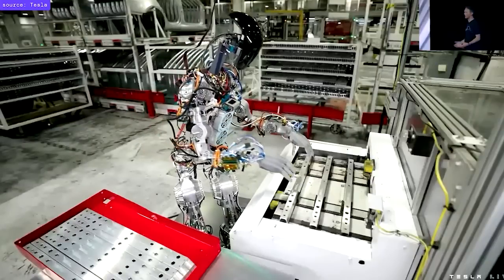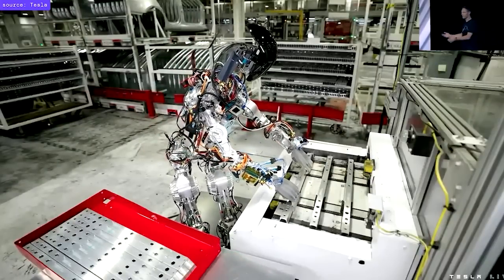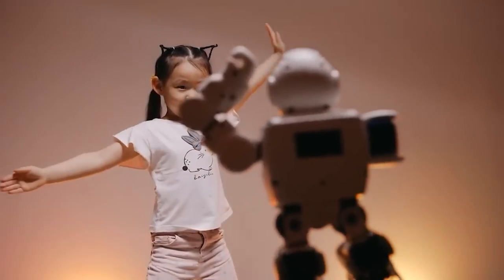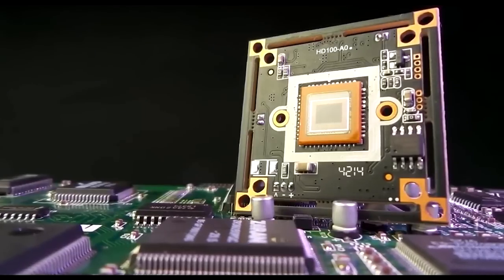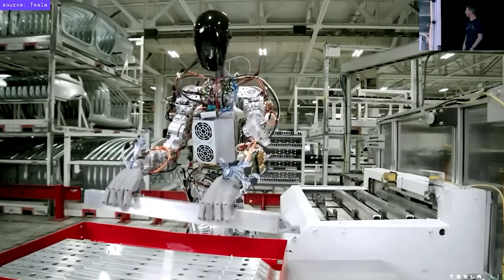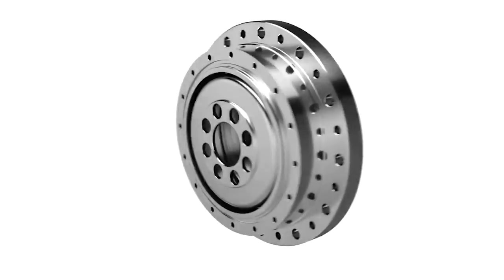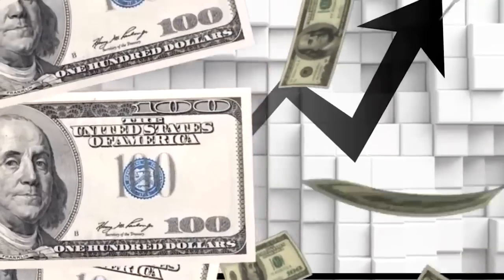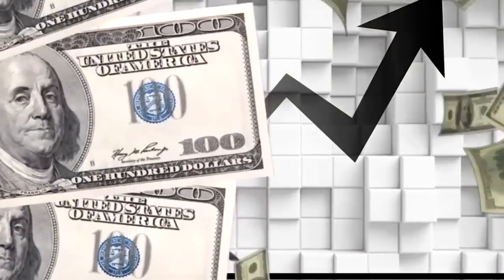As the robot is equipped with advanced technologies such as natural language processing and the ability to interact with humans naturally, the hardware required to support these technologies is expensive. For example, the robot requires harmonic drive and roller screw actuators, which are two of the most expensive actuators available.